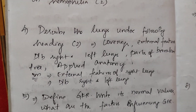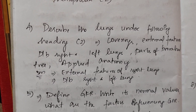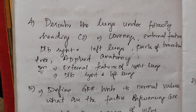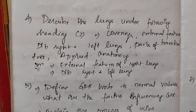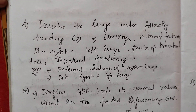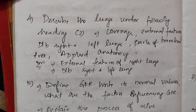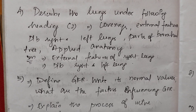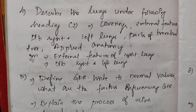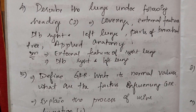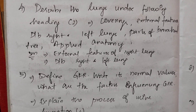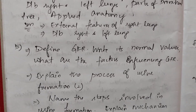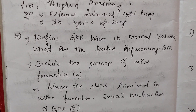Next, describe the lung under the following headings — this appears overall 2 times. Subtopics include: coverings, external features, differentiate between right and left lungs, parts of bronchial tree, and applied anatomy. Also: describe the external features of the right lung and differentiate between right and left lung.